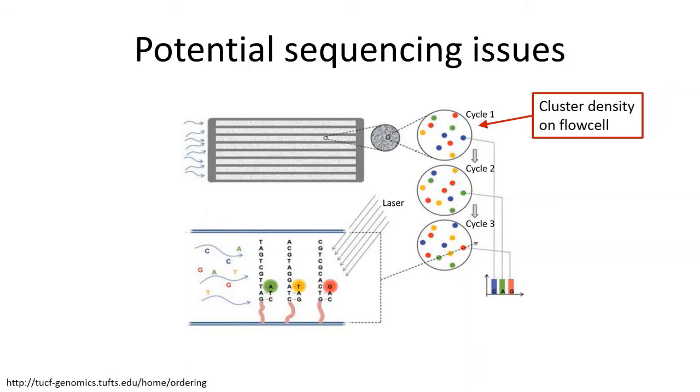That being said, it's something that you probably won't need to worry about. It's more of an issue for the sequencing core or facility that you're using that is sequencing your libraries. But you do need to worry about the quantitation that then goes into their calculations of what amounts of library are going to give the best cluster density.